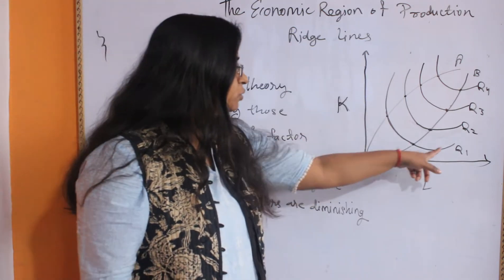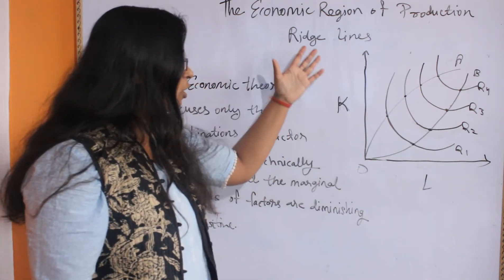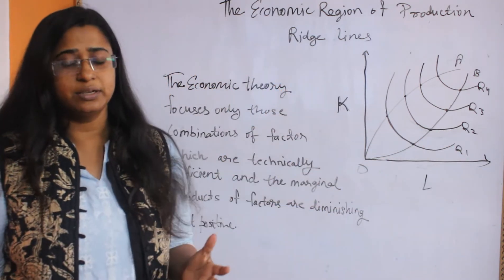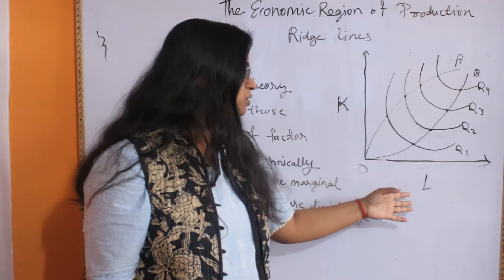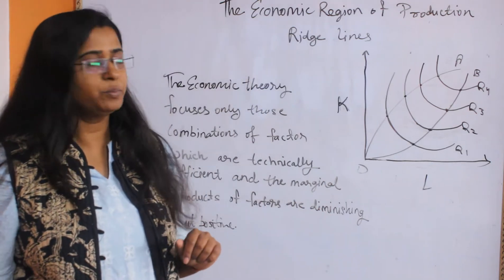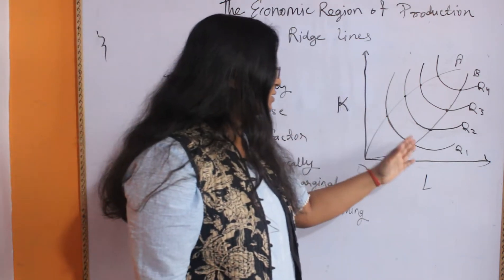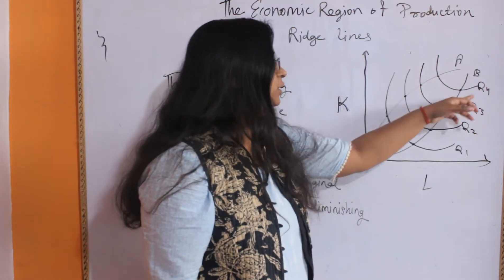You have an isoquant map here. On the vertical axis, you take capital, the factor of production, and on the horizontal axis, you take labor, the another factor of production. Here are the isoquants Q1, Q2, Q3, Q4.